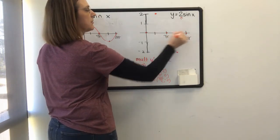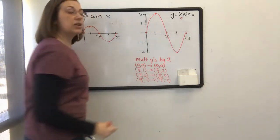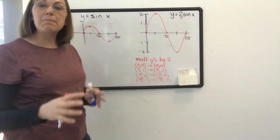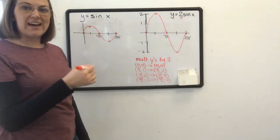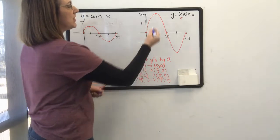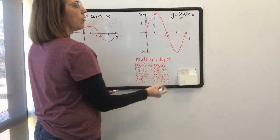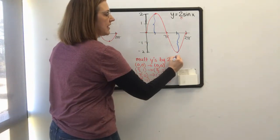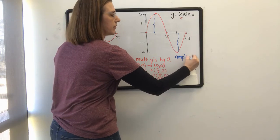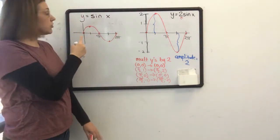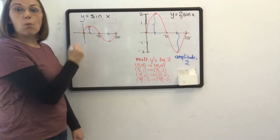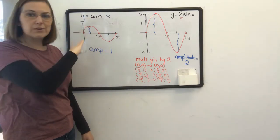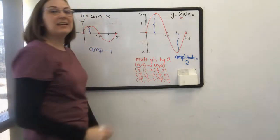You can see the curve has the same shape. However, the highs and lows — the max and the mins — have been stretched. We call that the amplitude. The amplitude is the height of the curve or the depth of the valley. So in this curve, the amplitude is 2, whereas on the original curve, the amplitude was 1. You can find the amplitude always in front of the trig function, whether it's sine or cosine.